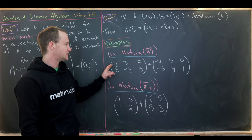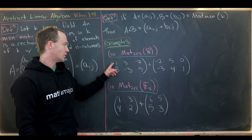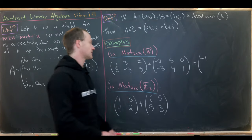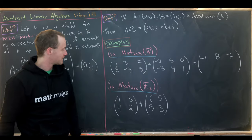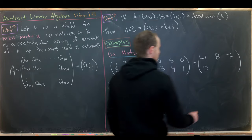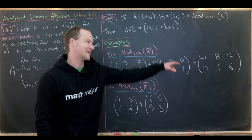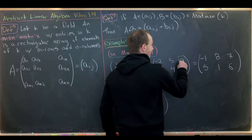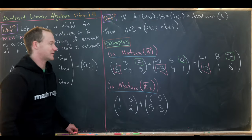Here we're doing a sum of two 2 by 3 matrices in R. We add top-left entries: 1 plus negative 2 gives negative 1; 3 plus 5 gives 8; 7 plus 0 gives 7; 8 plus negative 3 gives 5; negative 3 plus 4 gives 1; and 5 plus 1 gives 6. So the sum of those two 2 by 3 matrices gives us that 2 by 3 matrix. We just lined up entries and did six different addition problems.